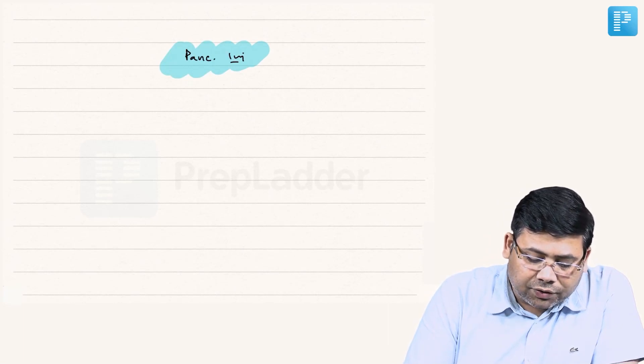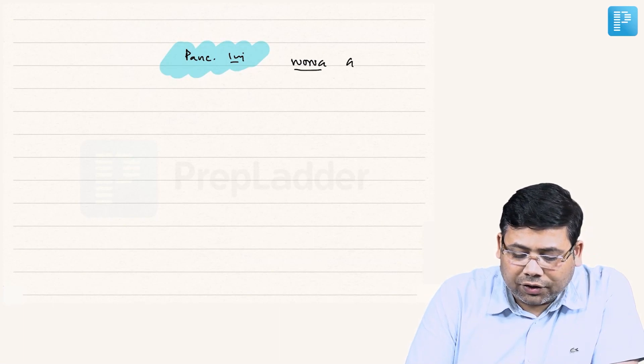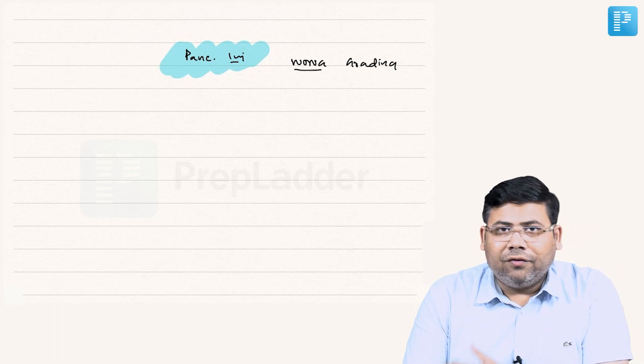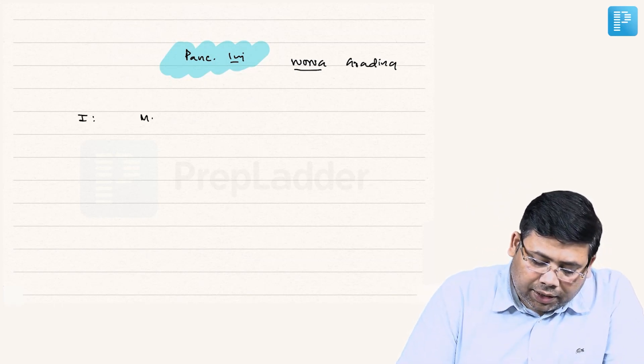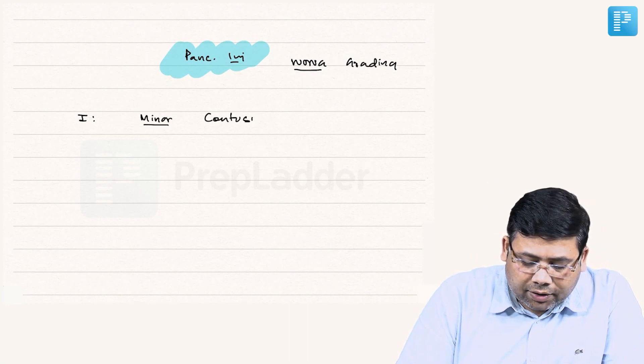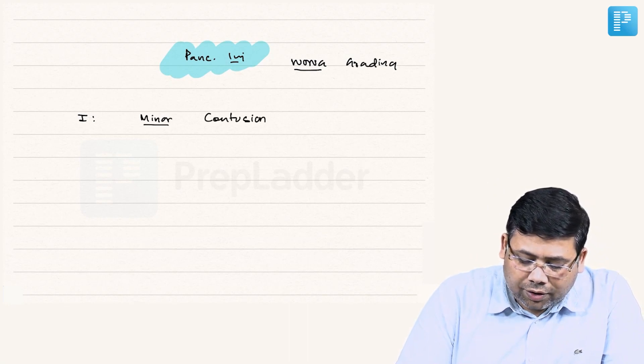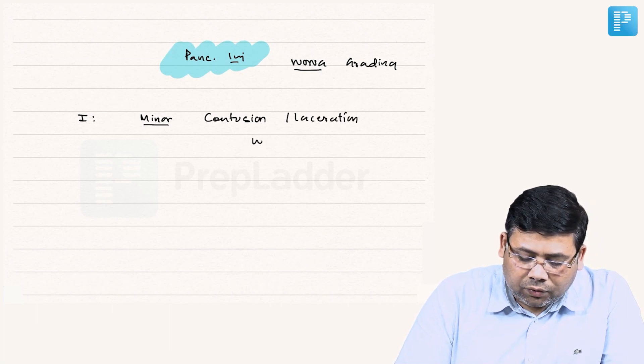So when we talk about pancreatic injury, we have a classification which is known as Wong classification or Wong grading system. We have five grades. Grade one is minor contusion or laceration without ductal disruption.